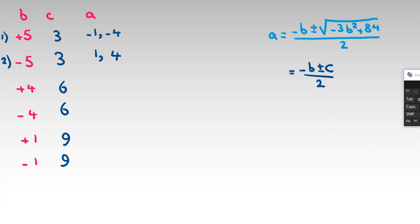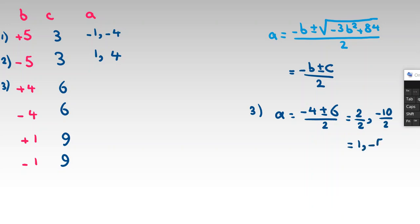Case 3: b = 4, c = 6. Then a = (negative 4 ± 6) / 2. That gives (negative 4 + 6) / 2 = 1, and (negative 4 minus 6) / 2 = negative 5. So a = 1 or negative 5.